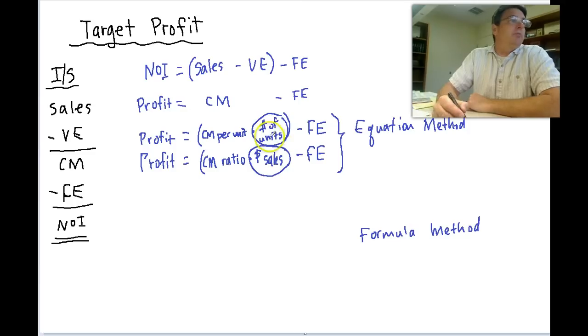So what we're going to do is basically just take these elements and move them to the other side of the equal sign. Actually I'm going to keep them on this side and I'm going to move the fixed expenses and the contribution margin per unit and contribution margin ratio over to the other side. How's that?